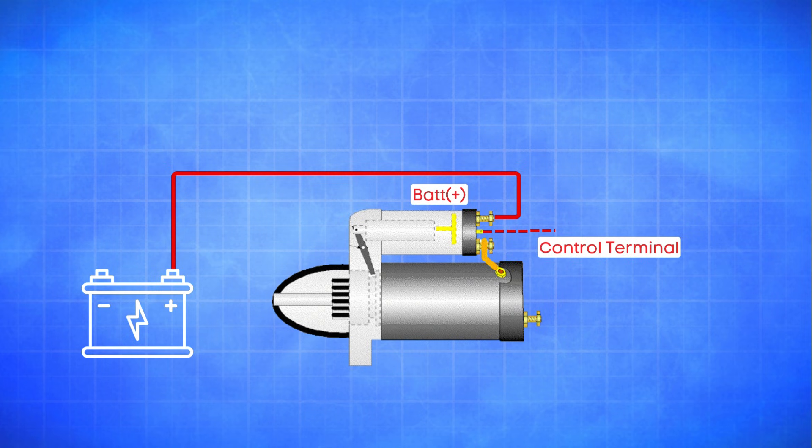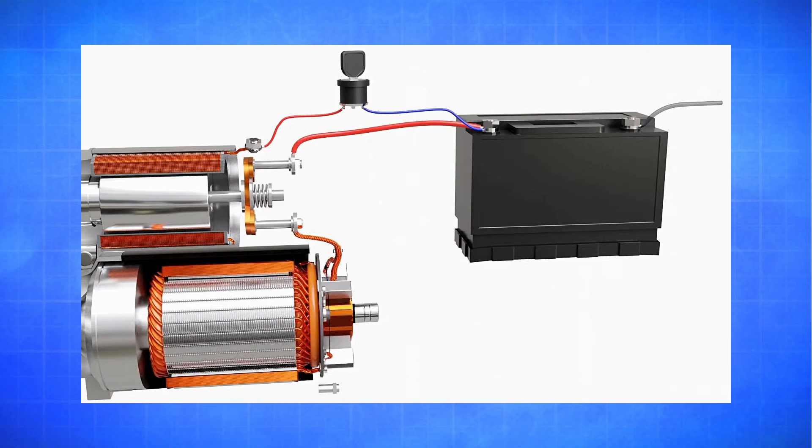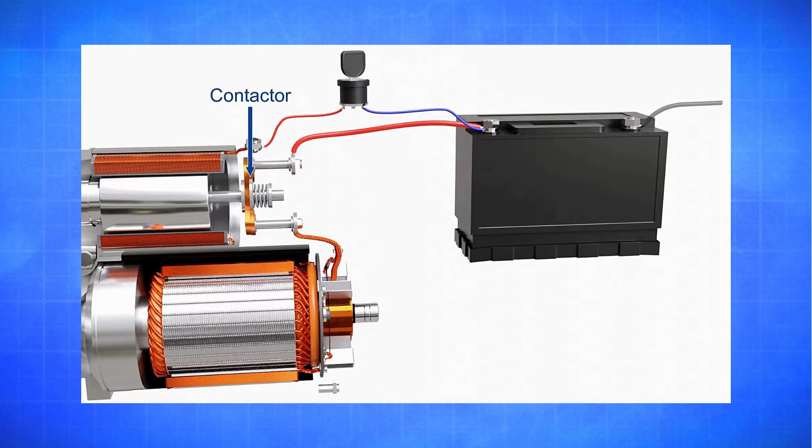Here's how it works. When you turn the ignition switch to the start position, a small electrical current flows to the control terminal of the solenoid. This action energizes the solenoid, which then closes a pair of heavy-duty contacts inside.